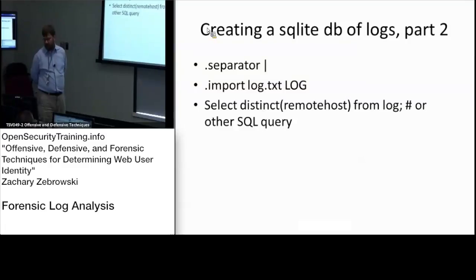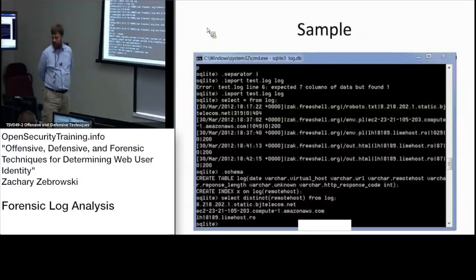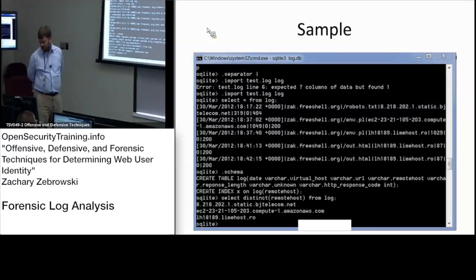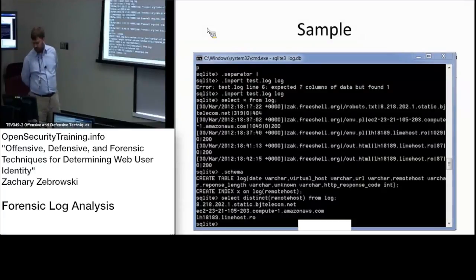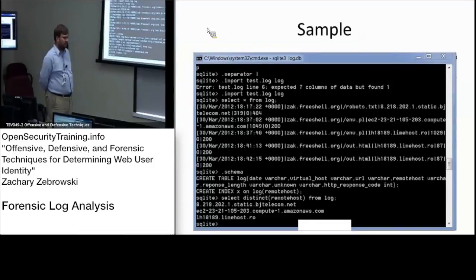At that point you can do things like SELECT DISTINCT on columns from log, or any other SQL query you want, and it will be incredibly fast. That's a really cool thing. You can do SELECT DISTINCT on various fields, get a list of all the distinct hosts or clients — for example, lines that involve exact.freeshell.org — and it just works.